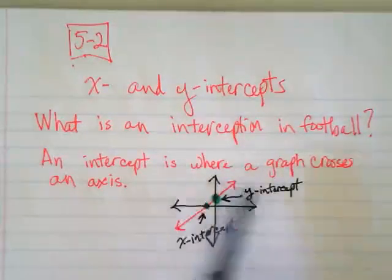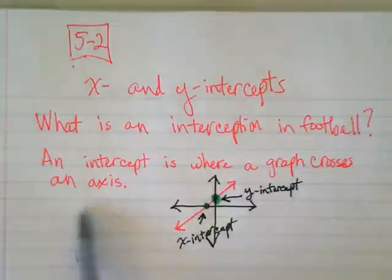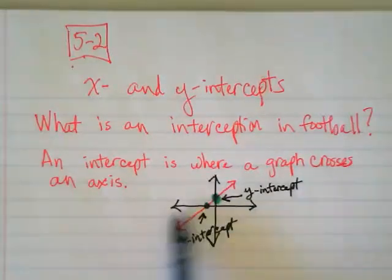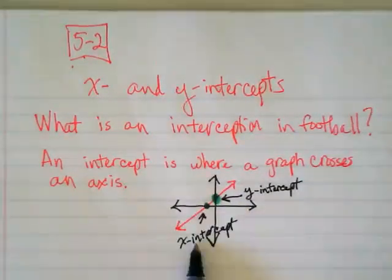An intercept is where a graph crosses an axis. Where it crosses the y-axis is a y-intercept. Where it crosses the x-axis is the x-intercept.